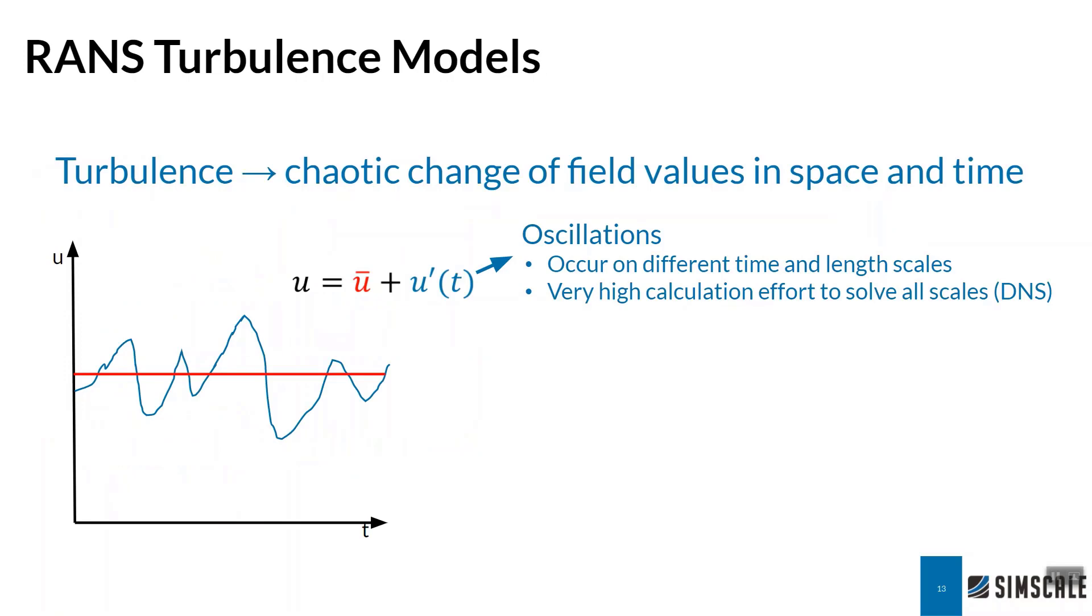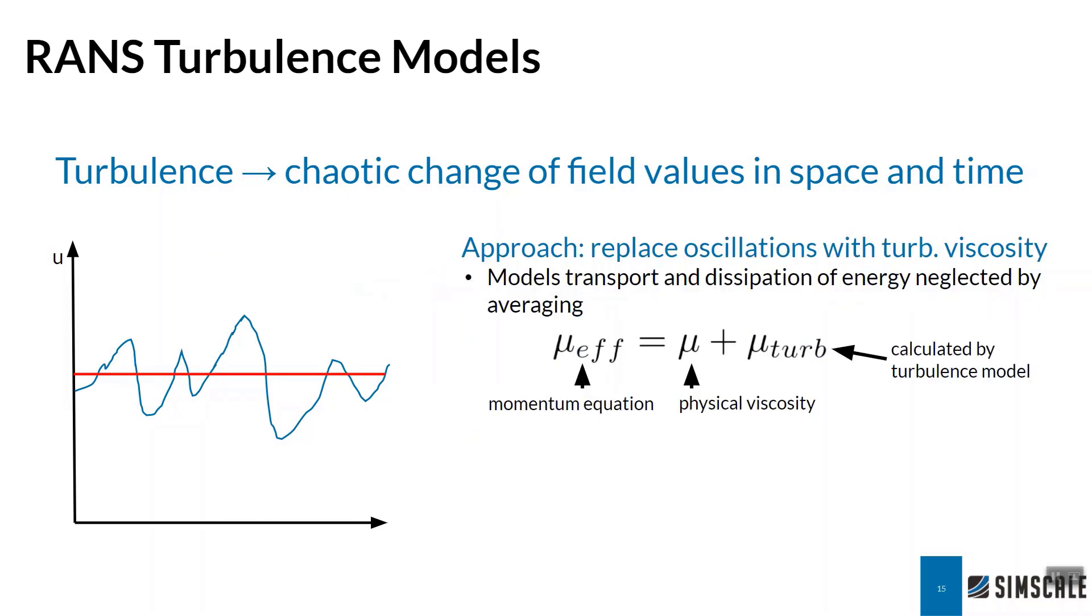So as I mentioned, rather than simulate both the mean value and the turbulent fluctuation, the main approach in the RANS family is to say we only track the mean value of our flow, but these added fluctuations we will consider them to be an additional viscosity, an additional diffusive flux that will spread out the heat or the momentum, whatever it may be, through the simulation.